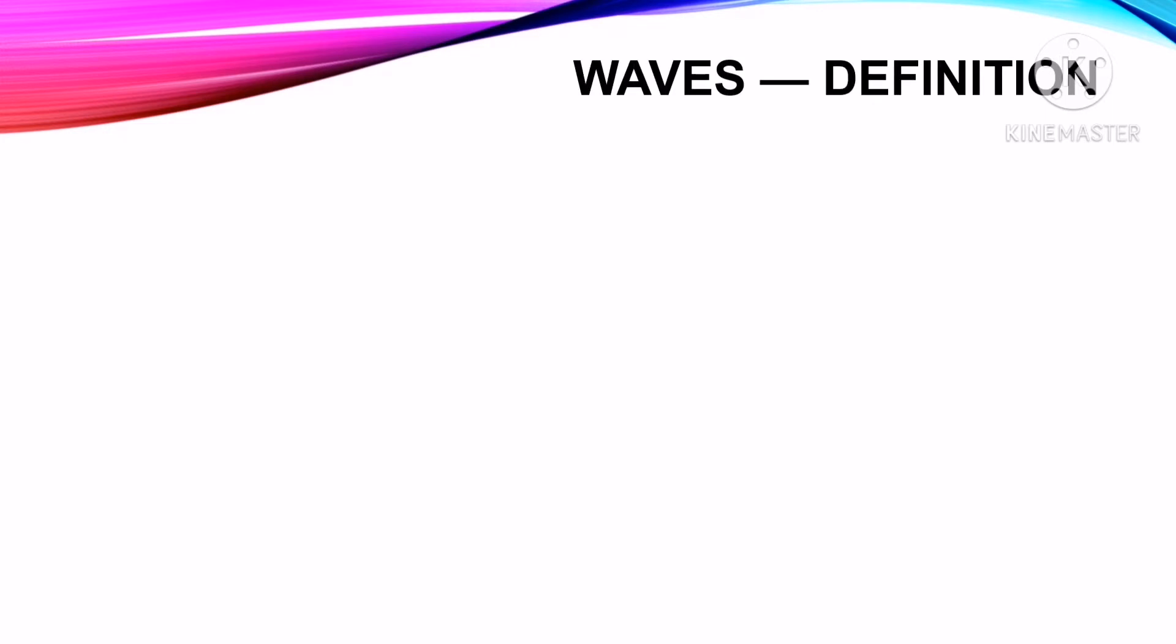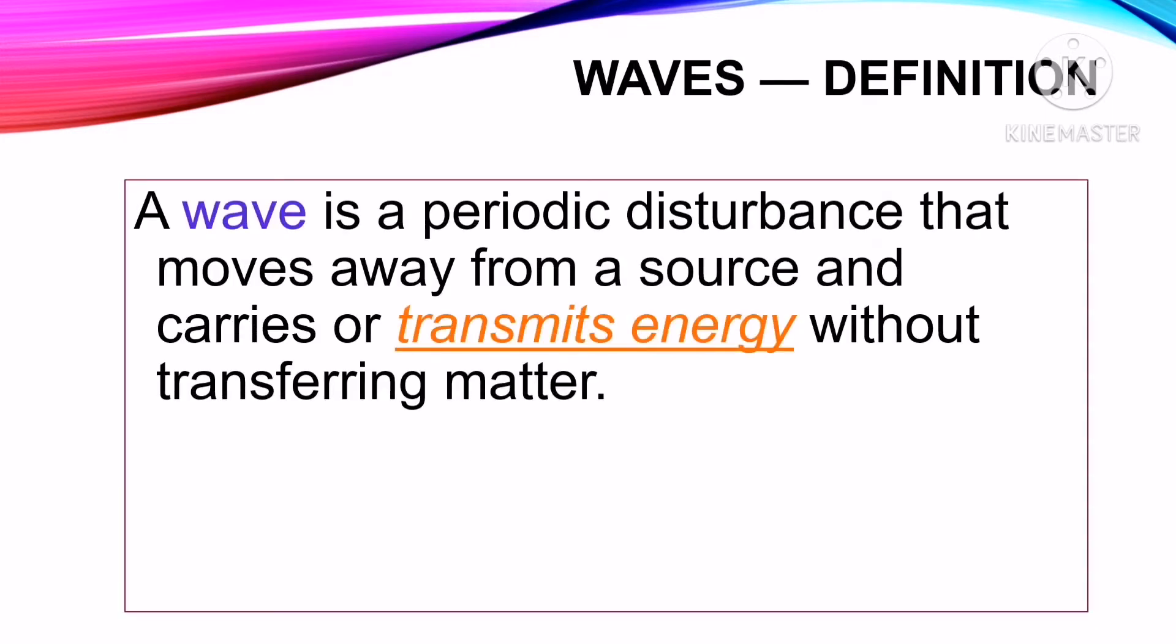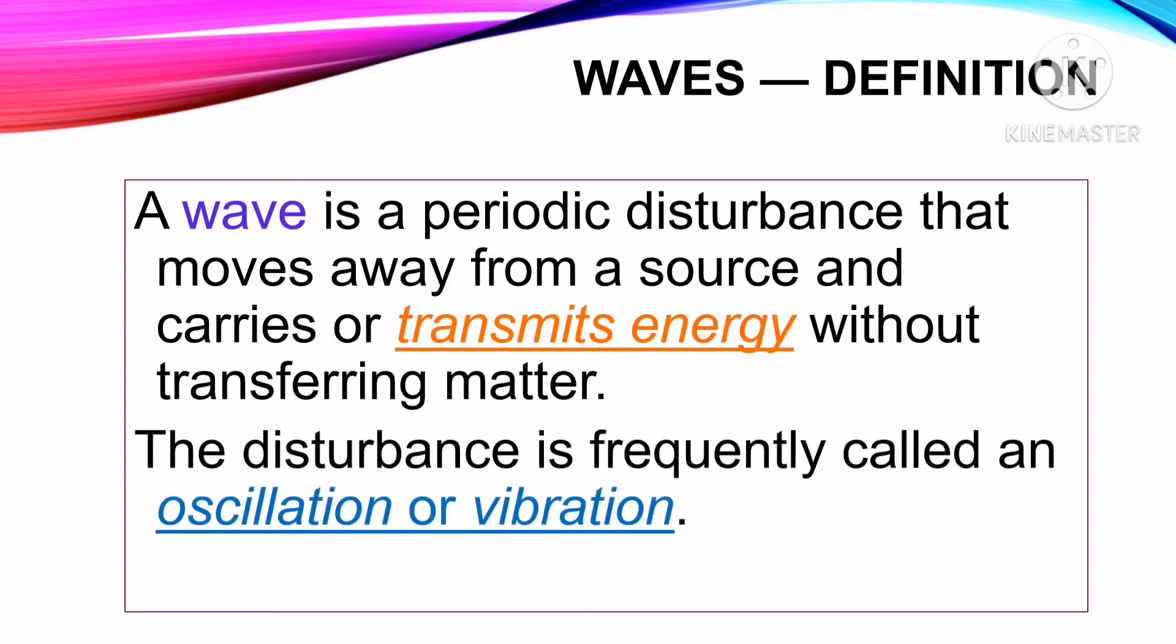What is a wave? A wave is a periodic disturbance that moves away from a source and carries or transmits energy without transferring matter. The disturbance is frequently called oscillation or vibration.